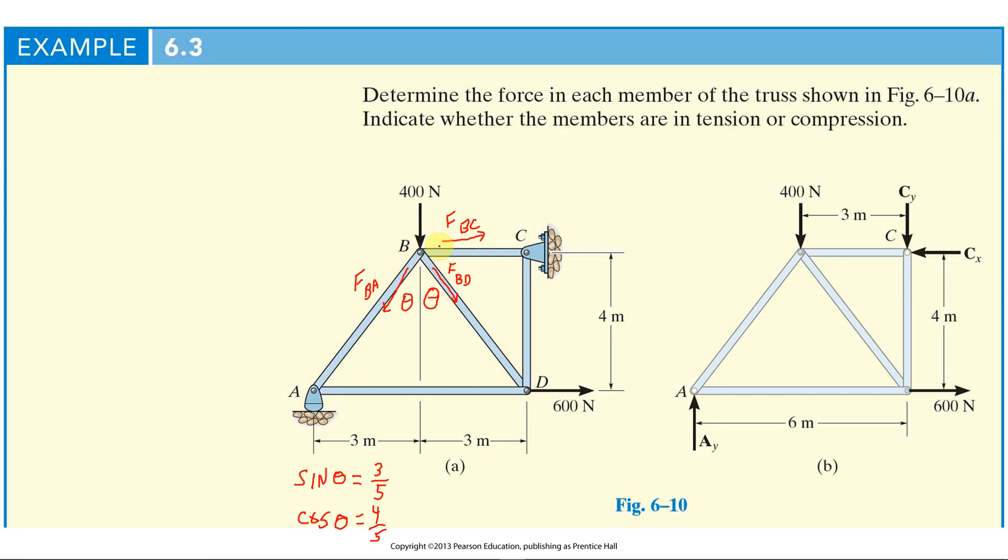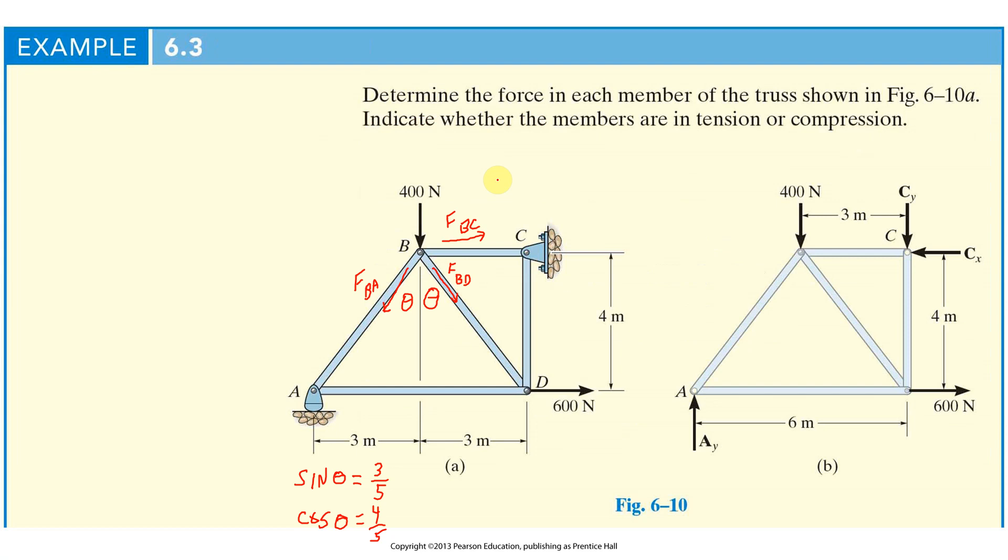And we see summation of FX, 600 newtons minus CX. So the first thing the book does, I got a little ahead of myself. The first thing in analyzing the problem is look at the overall reactions. So it looks at the entire structure, looks at the free body diagram of the entire structure. And then finds the reaction forces, the overall forces. So AY minus CX minus 400 has to equal zero. Negative CX plus 600 has to equal zero. So CX has to equal 600.